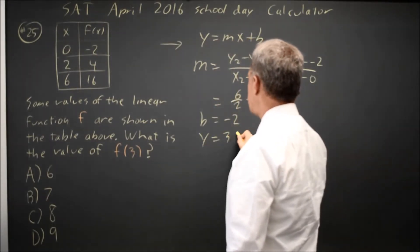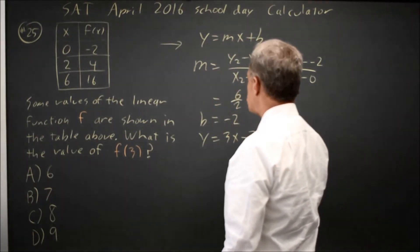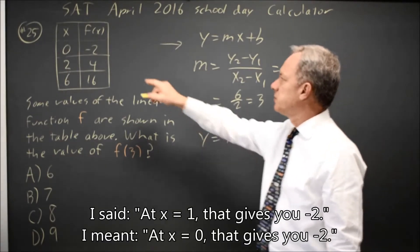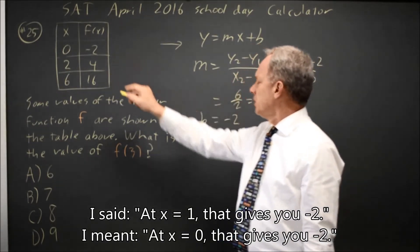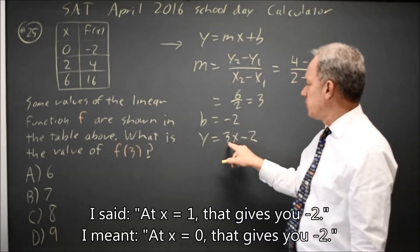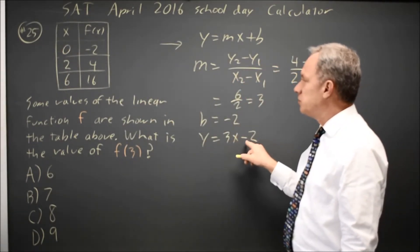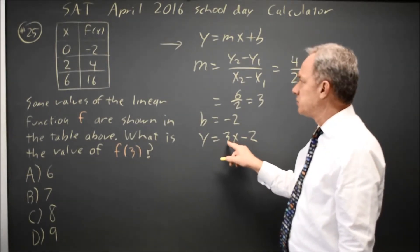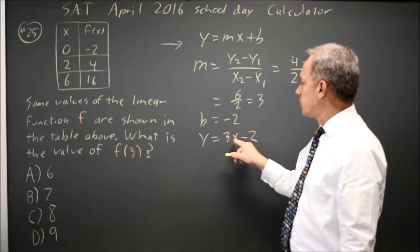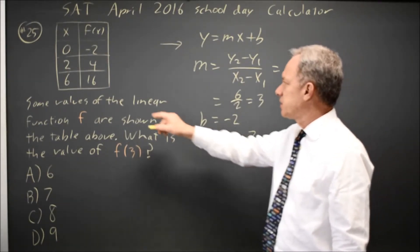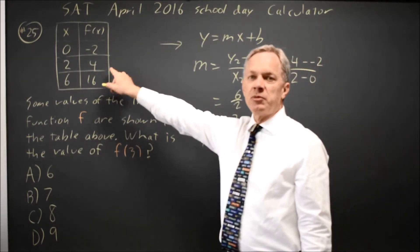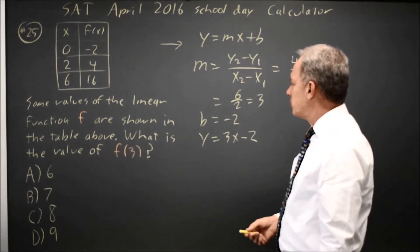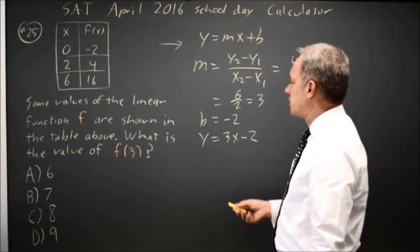So y equals 3x minus 2. At x equals 1 that gives you negative 2, which is correct. At x equals 2 that gives you 6 minus 2 is 4, which is correct. At x equals 6, 3 times 6 is 18 minus 2 is 16. So that matches all three values, which is probably overdoing the checking.